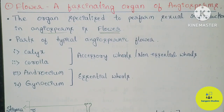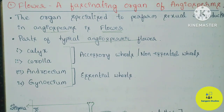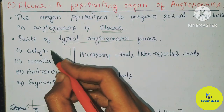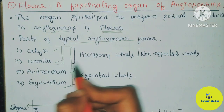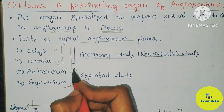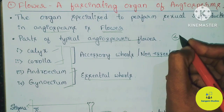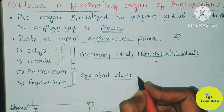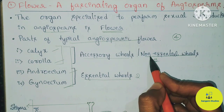The typical Angiosperm flower has a total of four whorls. They are called Calyx, Corolla, Androecium, and Gynoecium. The first two parts — Calyx and Corolla — are non-essential whorls, while the second two parts — Androecium and Gynoecium — are essential whorls. In total there are four whorls: two non-essential and two essential.